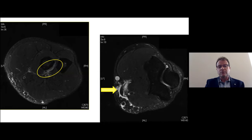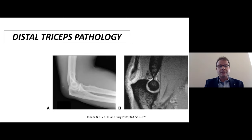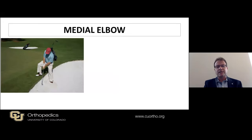Distal triceps pathology may present as a palpable defect at the triceps insertion with limited radiographic findings, though you may see a subtle avulsion injury. MRI can be helpful for tendinosis-related changes or degenerative processes associated with triceps pathology.